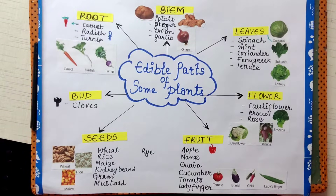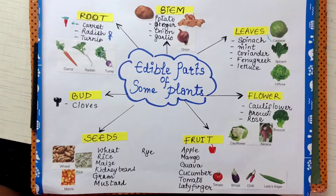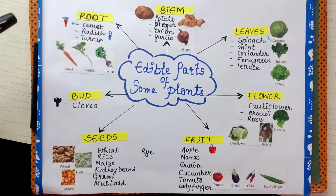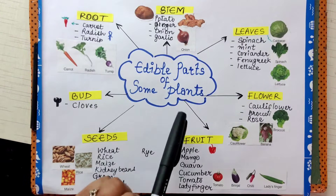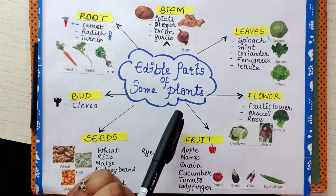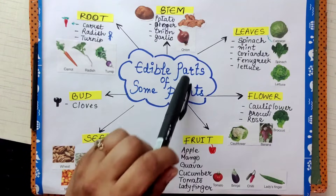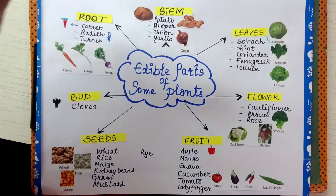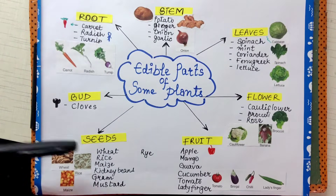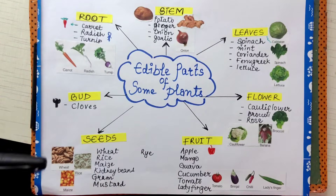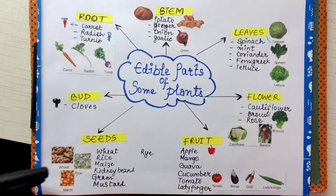Today we are going to talk about the edible parts of some plants. They are very simple because these are the parts you have taken in your food. The parts of plants are root, stem, leaves, flower, fruit, seeds, and bud. So this is how we are going to proceed.